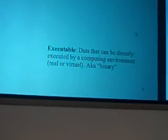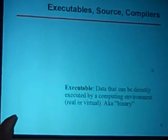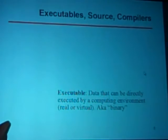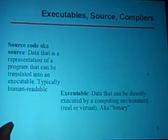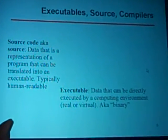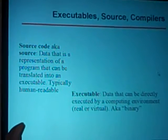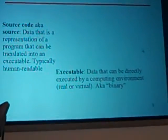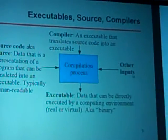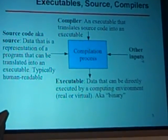Some data inside a computer program can be executed — it's a program you can run. We call these executables: data that can be directly executed by some computing environment, real or virtual, sometimes called binaries. These are rather painful to work with directly, so typically when people write programs, they write source code. Source code is a representation of a program that can be translated into an executable. Compilers are programs that translate source code into an executable that a computer can actually use.